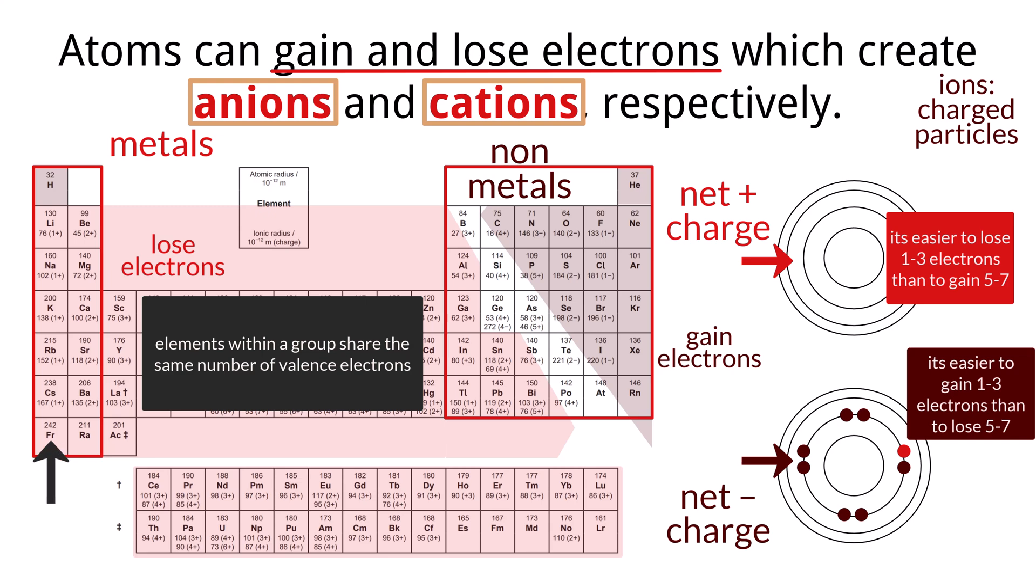For metals in group 1, the alkali metals, losing one electron results in a plus one charge. Group 2 metals, the alkaline earth metals, typically lose two electrons to form plus two ions. For nonmetals, group 17, the halogens, gain one electron, which gives them a negative one charge, while group 16 elements often gain two electrons to form minus two ions. This drive to achieve a stable noble gas configuration is the key to predicting these charges.